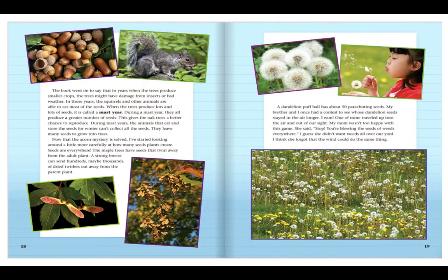The book went on to say that in years when the trees produced smaller crops, the trees might have damage from insects or bad weather. In those years, the squirrels and other animals are able to eat most of the seeds. When the trees produce lots and lots of seeds, it is called a mast year.